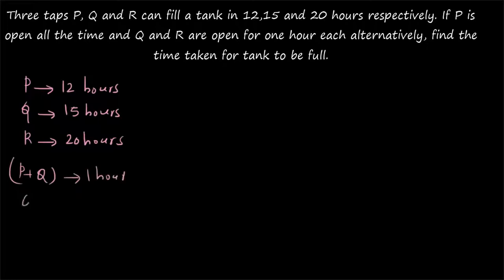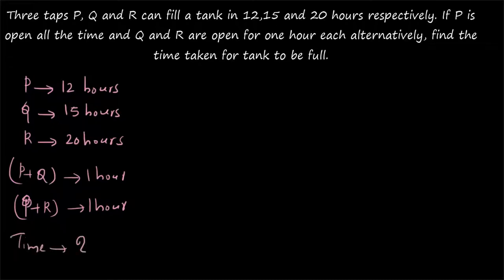Then P plus R will be working for the next hour, and so on — P plus Q, then P plus R, alternating. Q and R are opened alternatively while P is open all the time. You have to find how much part of the tank is filled by P plus Q in one hour and how much part is filled by P plus R in one hour, in order to proceed.